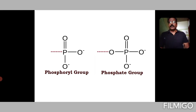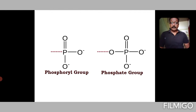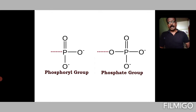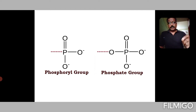So what is substrate level phosphorylation? It is the transfer of a phosphoryl group from a substrate to ADP so as to form ATP. This is basically what is termed substrate level phosphorylation.